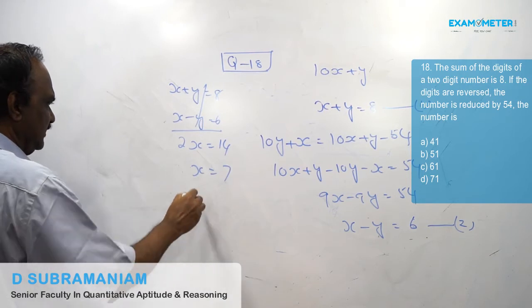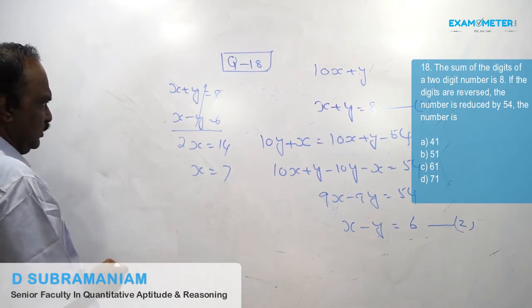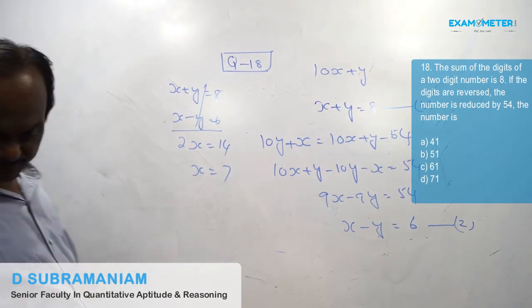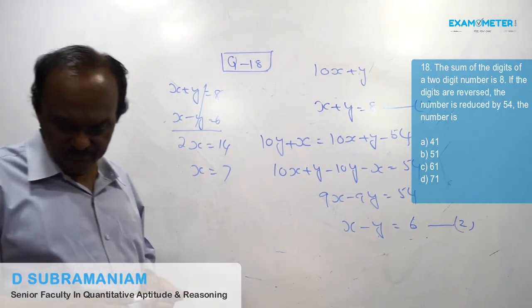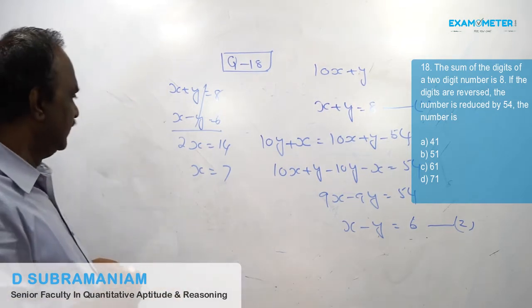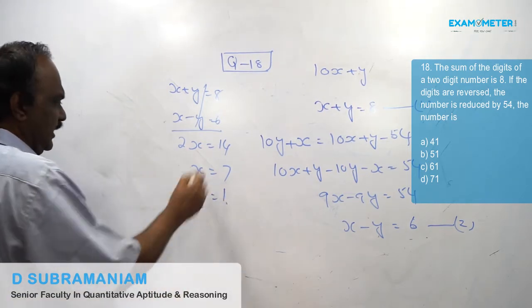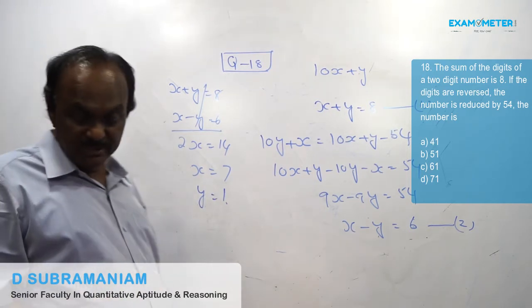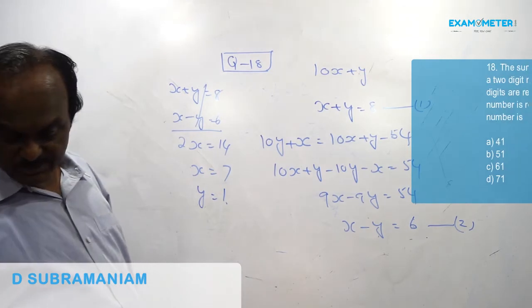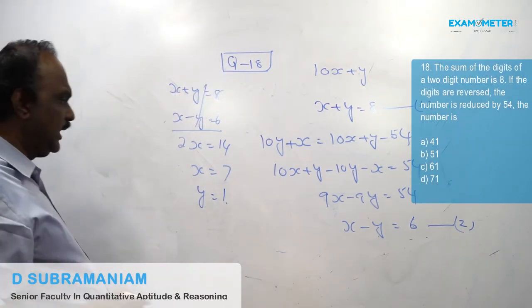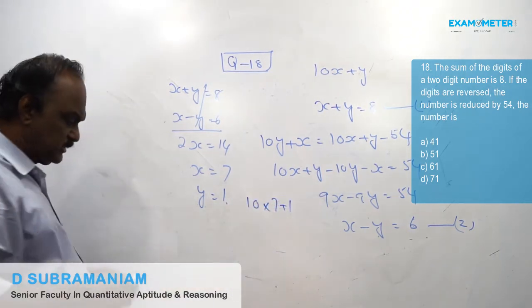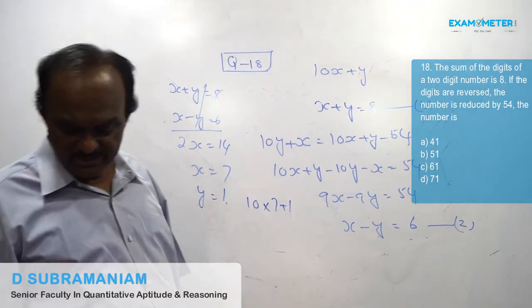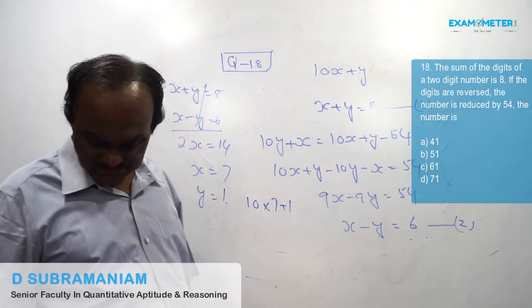So x = 7 and y = 1. Therefore the required number is 10x + y = 70 + 1 = 71. So the answer is 71, which is multiple choice D.